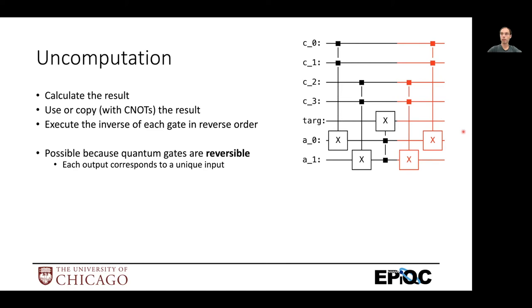And when they're both zero at the output without measuring them. Now we've restored interference on the rest of the circuit. Now this is only possible because quantum gates are reversible. So every gate has an inverse. In this case, the Toffoli gate is its own inverse. So we just have a second Toffoli gate here. But some gates we have like the T gate or the S gate, we have to use an inverse T gate or an inverse S gate.